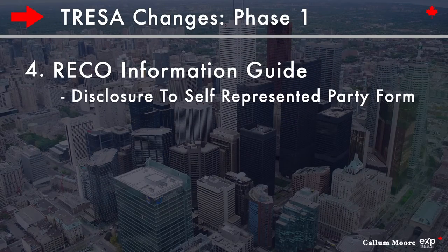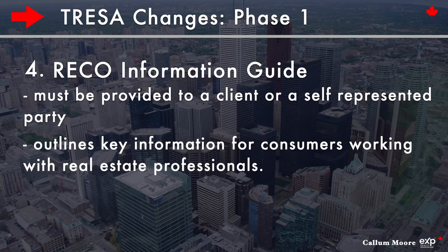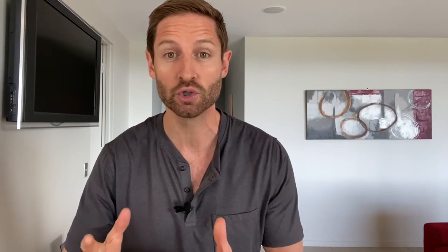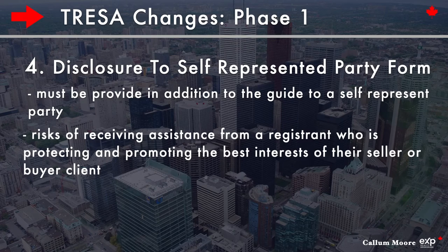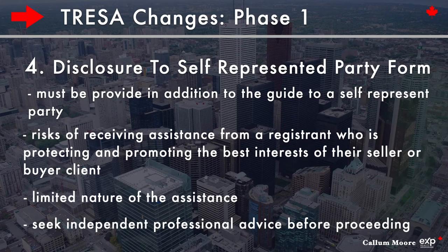Fourth, the RICO Information Guide and Disclosure to Self-Represented Party Form. The RICO Information Guide must be provided to a client or a self-represented party. This guide, published by RICO, outlines key information all consumers should know about working with real estate professionals. We as registrants must explain the contents of the guide before providing any service or assistance. The Disclosure to Self-Represented Party Form must also be provided to make sure they understand the risks of receiving assistance from a registrant who is protecting a seller or buyer client, the limited nature of the assistance, and that they should seek independent professional advice before proceeding.